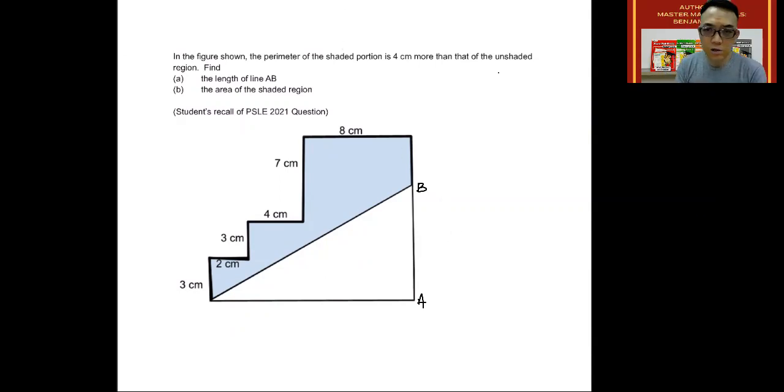Okay, you see, in all questions like this, we have to first underline keywords. So what are the keywords here? The keywords are that the perimeter of the shaded portion is 4cm more than that of the unshaded portion. And the question is asking you to find the length of AB and then the area of the shaded region.